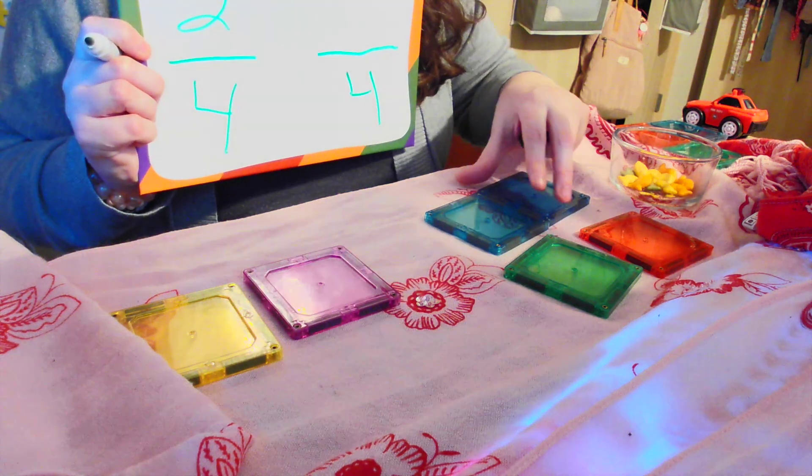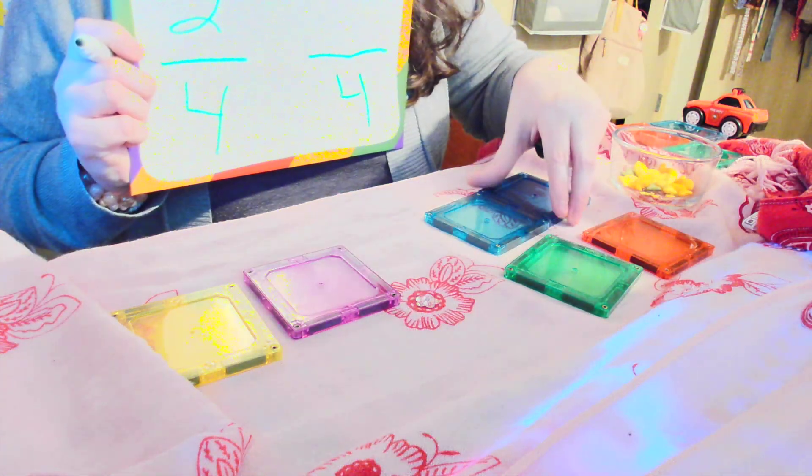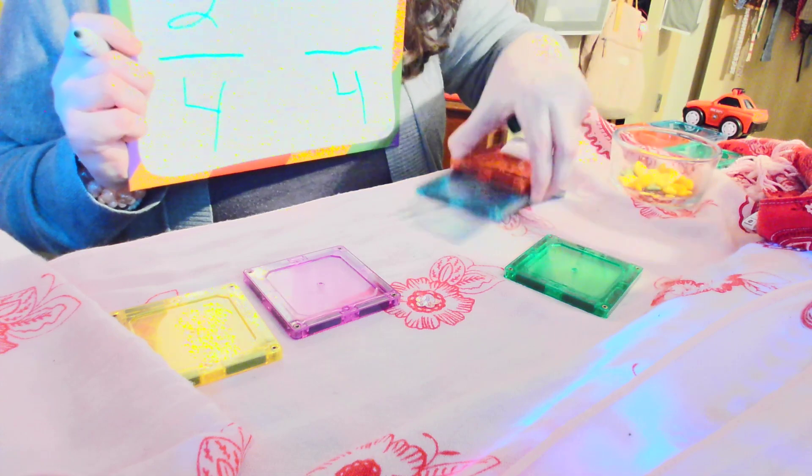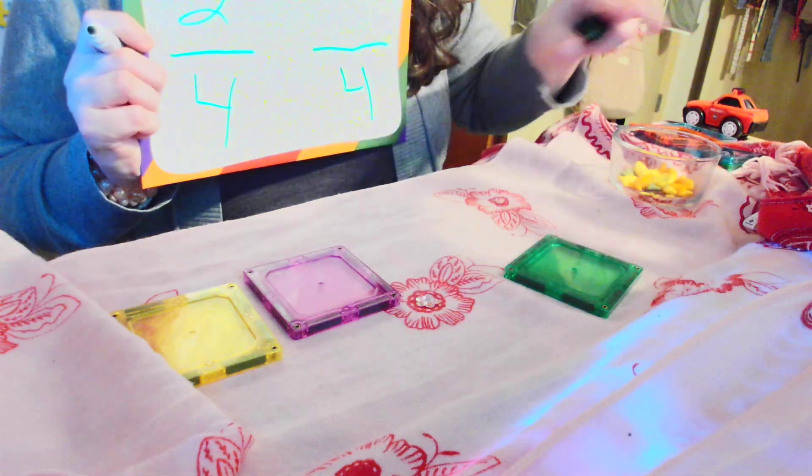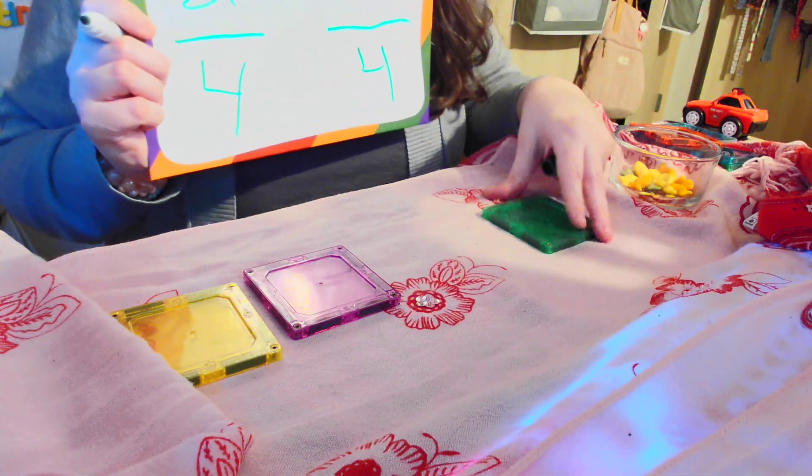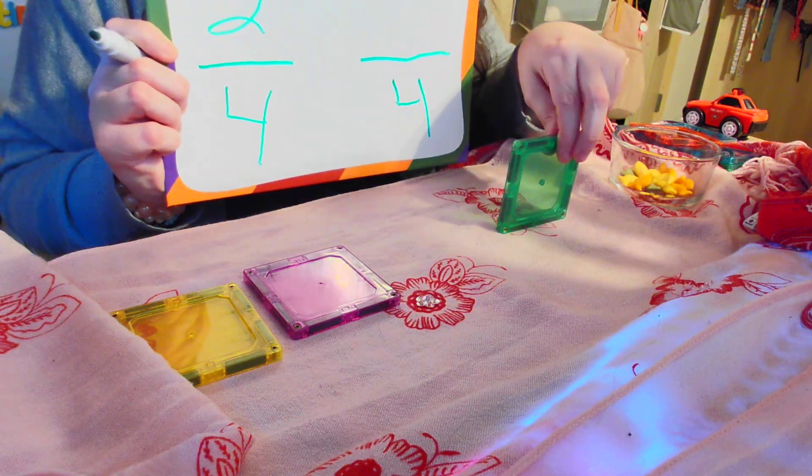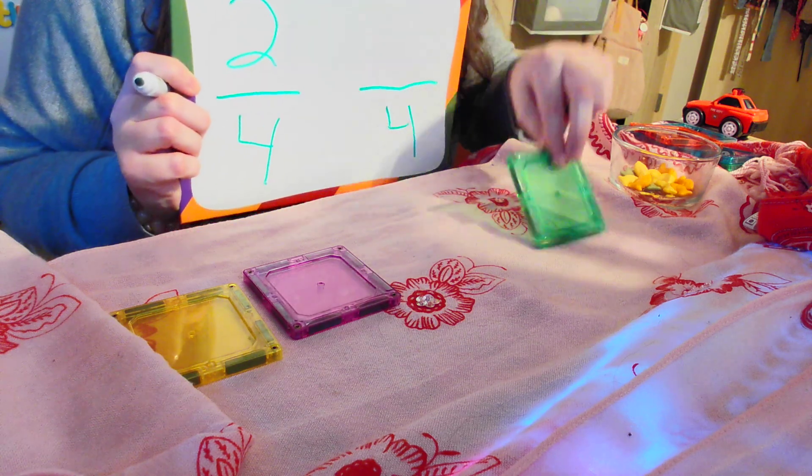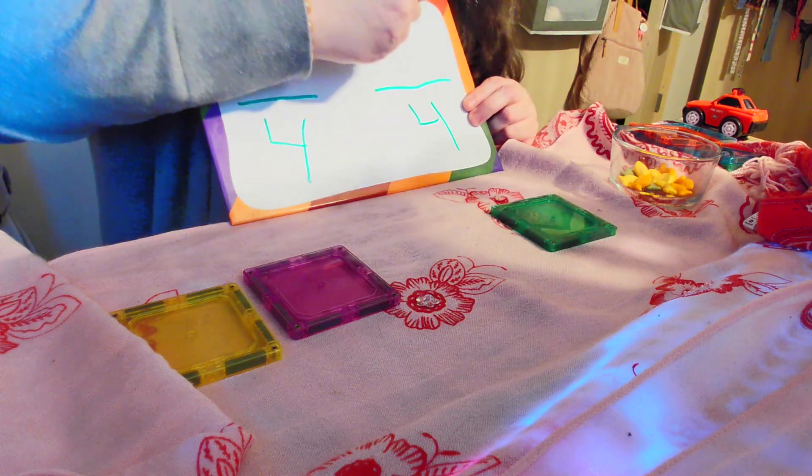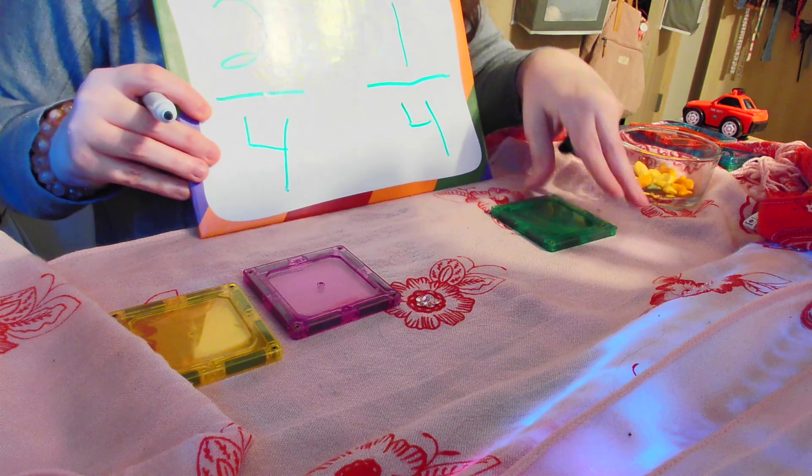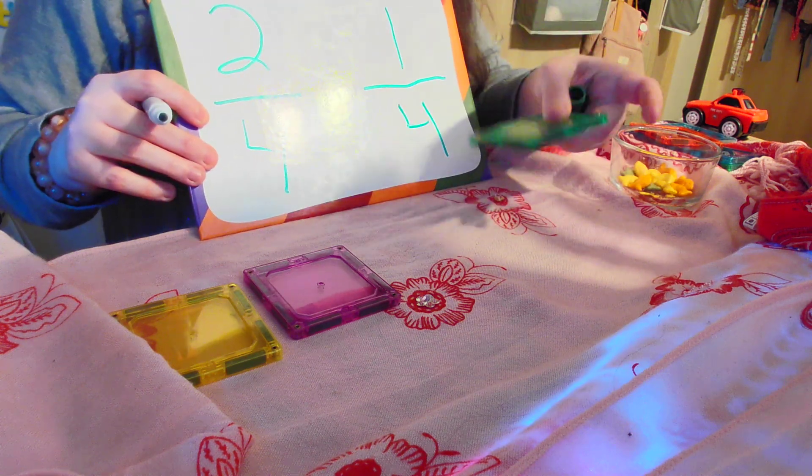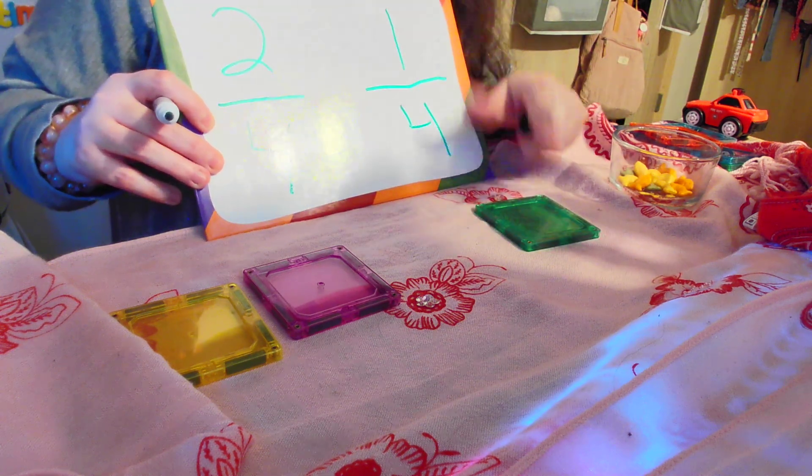Now, this one over here still has all four pieces. Let's take three. Let's take three of those away this time. How many pieces do I have left of my original square over here with the square that I started with? I have one piece left. So right here on the board, we're going to put that I have one piece out of my four left.